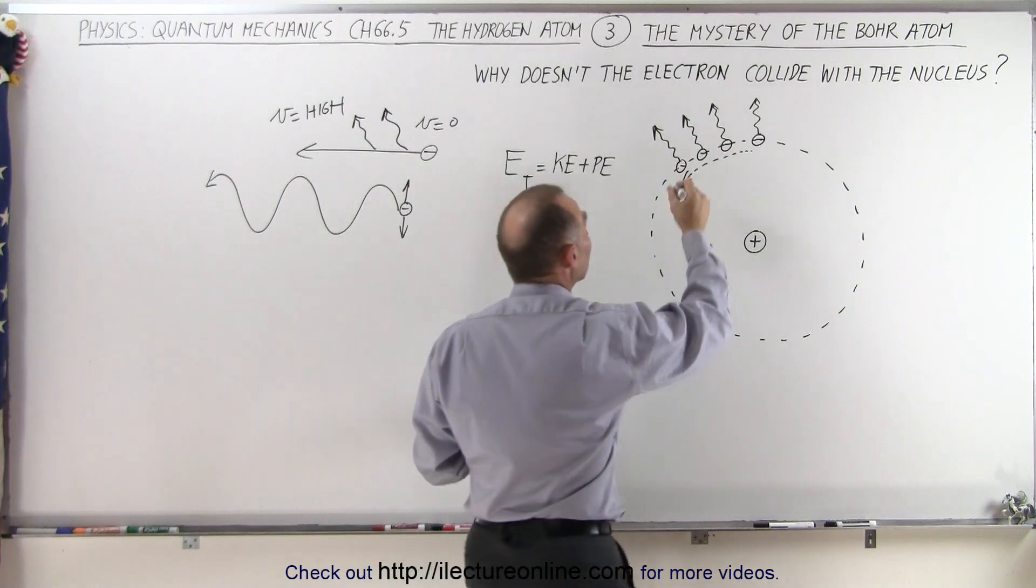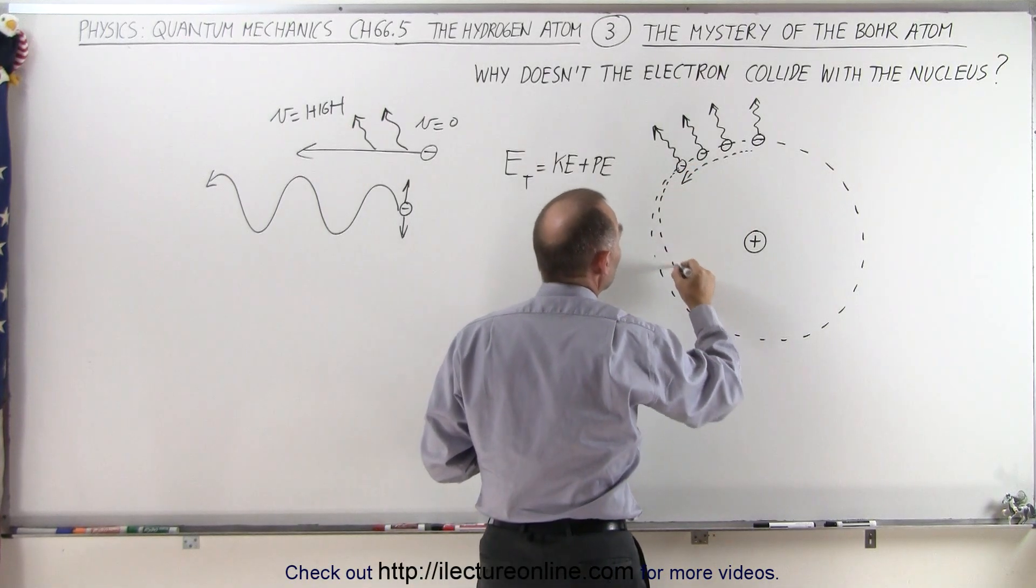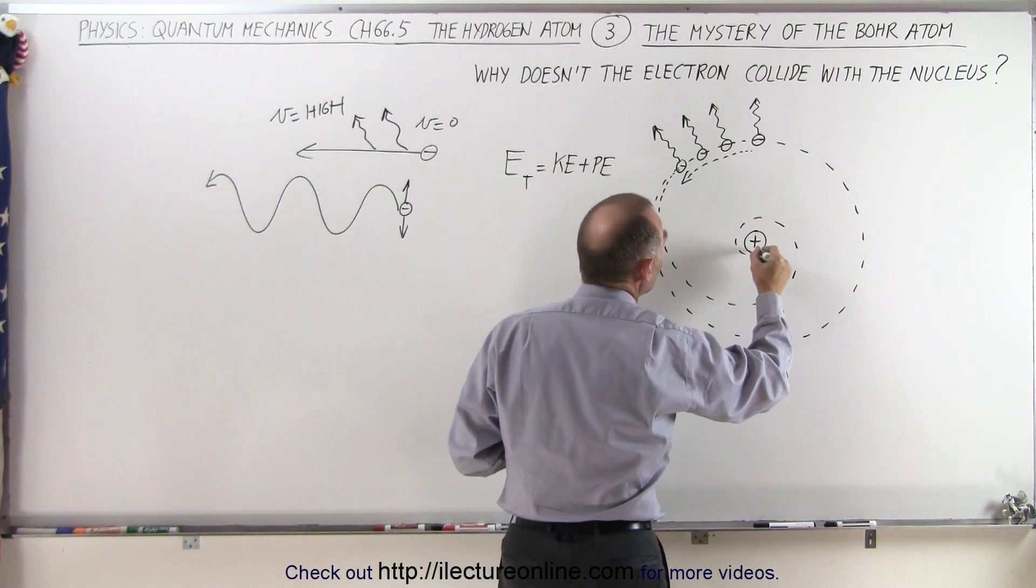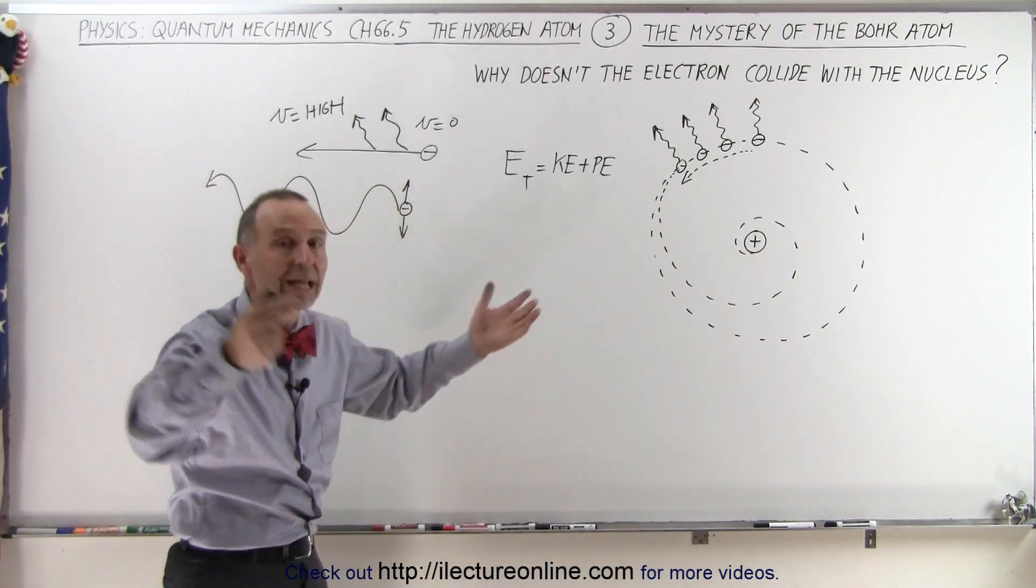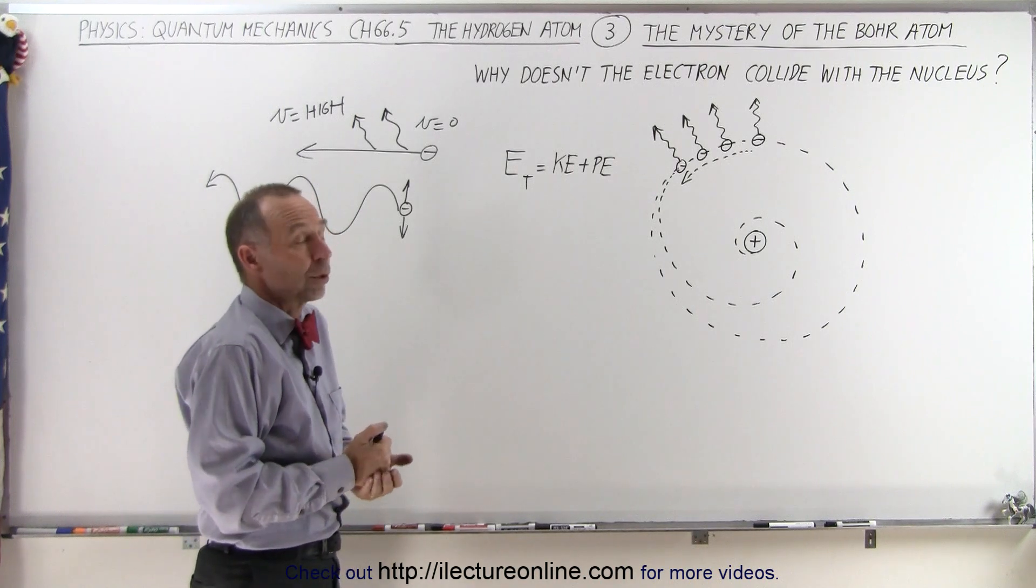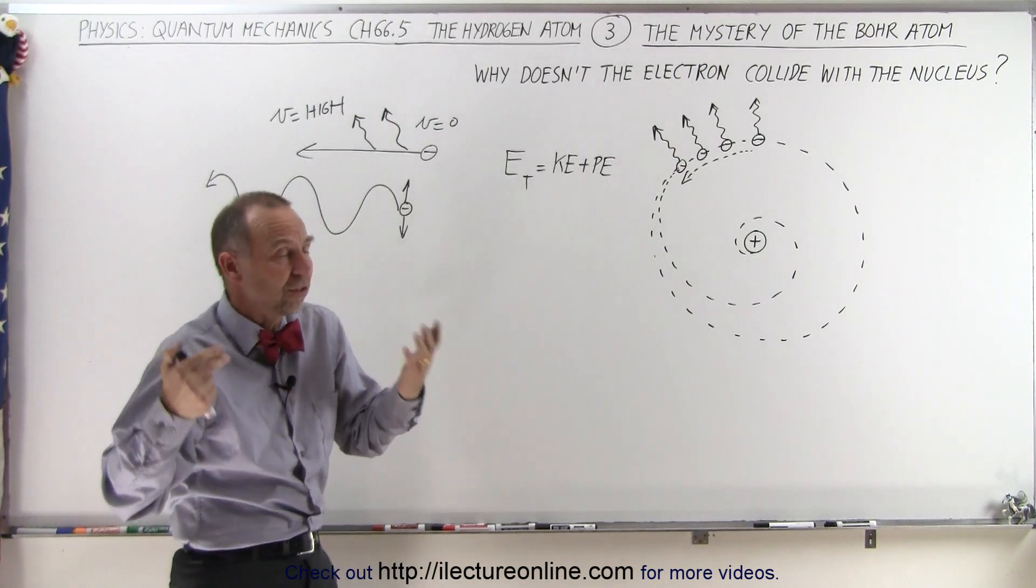As it loses velocity, the electron would begin to spiral inward, and eventually you could see that every electron in the universe would be spiraling inward into the nucleus, and the atom would simply cease to exist. In other words, the universe as we know it would cease to exist.